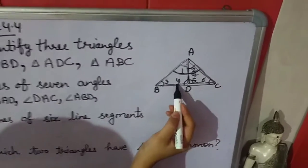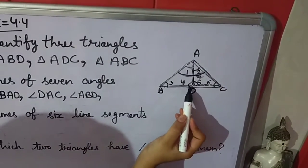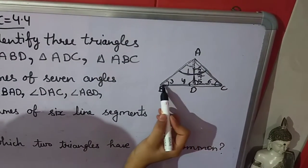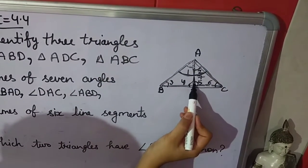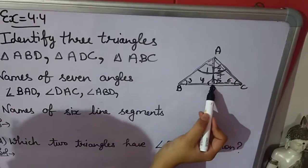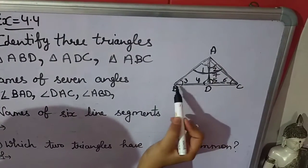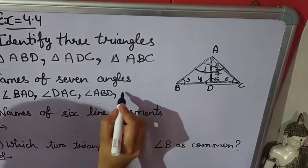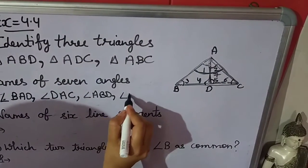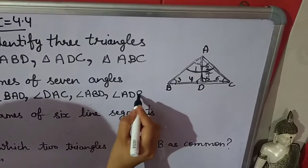Now the 4th angle. What are the arms? The arms are AD and BD, and D is the vertex. So angle 4 is angle ADB.